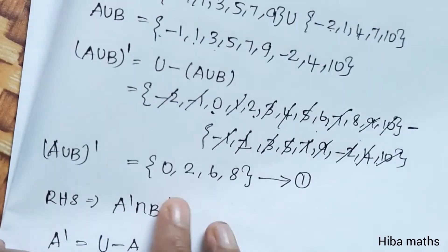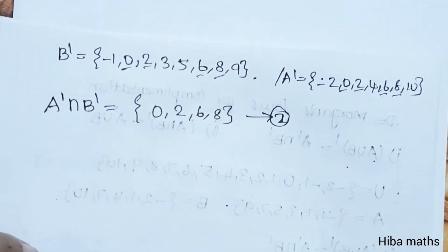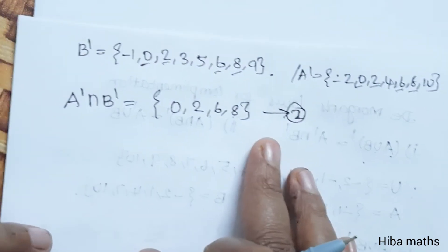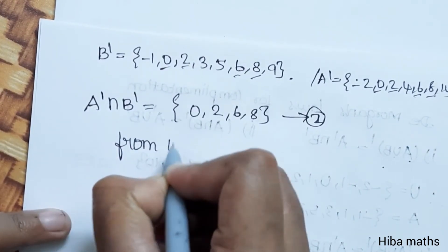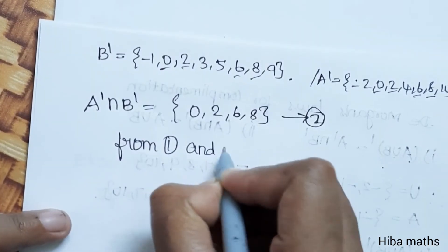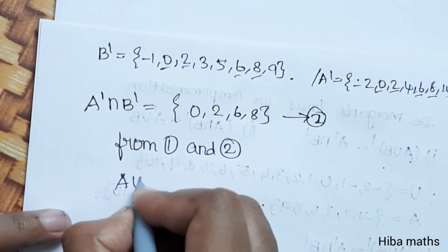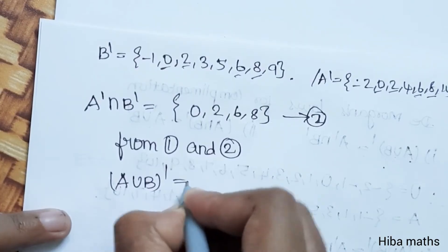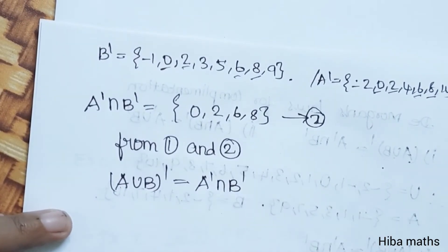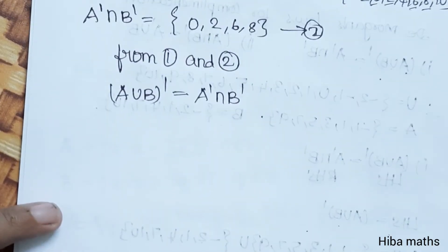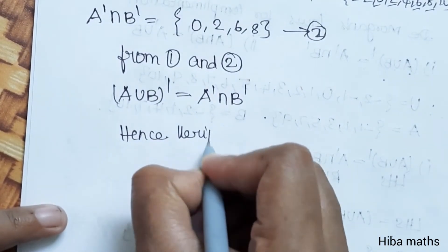LHS result is {0, 2, 6, 8}. RHS result is {0, 2, 6, 8}. So from 1 and 2, A union B whole dash is equal to A dash intersection B dash. Hence verified.